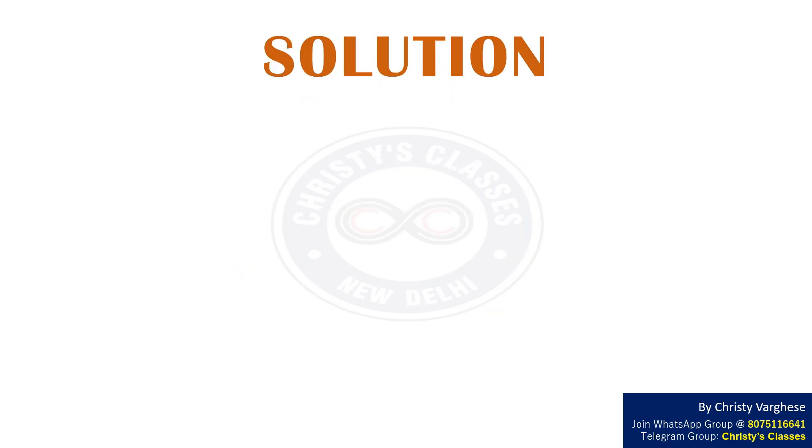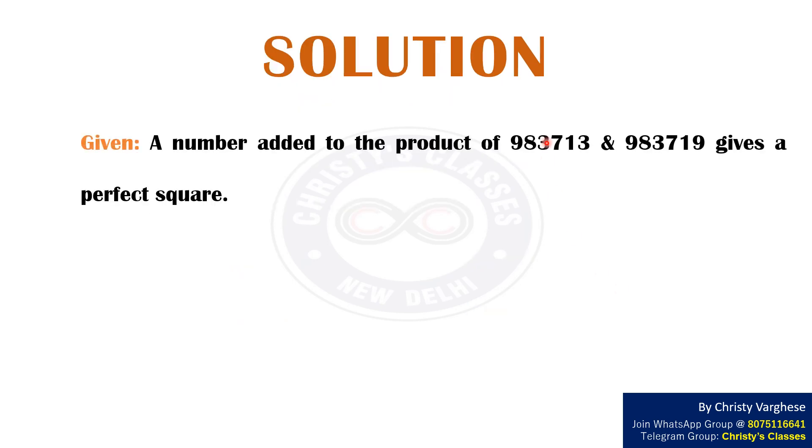Solution: Given that a number added to the product of 983713 and 983719 gives a perfect square. Let x be the required number.